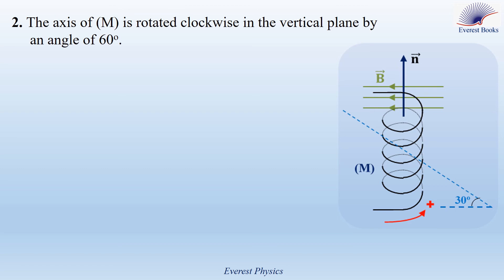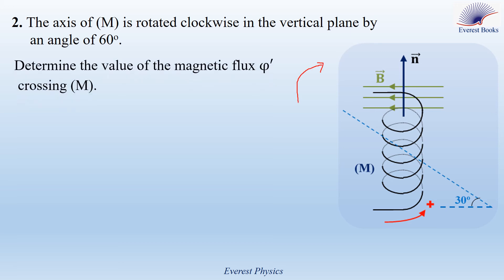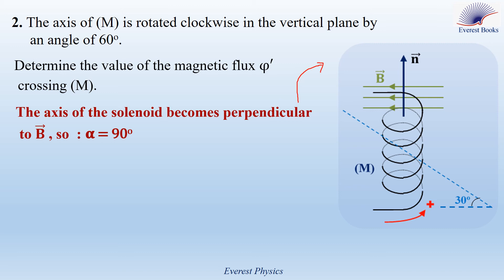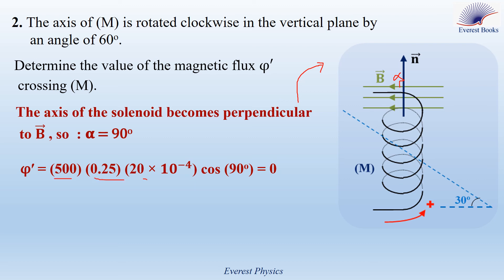Part two: the axis of M is rotated clockwise in the vertical plane by an angle of 60 degrees. The figure shows that the axis of the solenoid becomes perpendicular to B, so the angle alpha between B and N equals 90 degrees. Using the flux expression, phi prime equals N times B times S times cosine 90 degrees, which equals zero. When the flux is zero, B has no component normal to the surface of each loop.